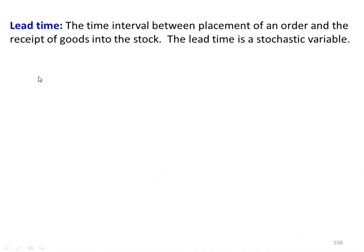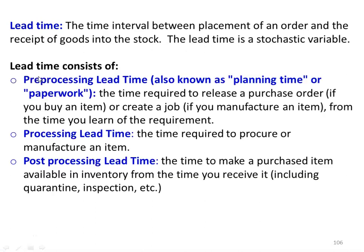In inventory management, the first parameter we discussed earlier is lead time. The time interval between the placement of an order and the receipt of the goods into stock is the lead time. Lead time is a stochastic variable. Lead time consists of three elements. The first is pre-processing lead time, also known as planning time or paperwork — the time required to release the purchase order. If you are buying a certain item from your vendor, it is the time to prepare the letter and send it to the vendor.